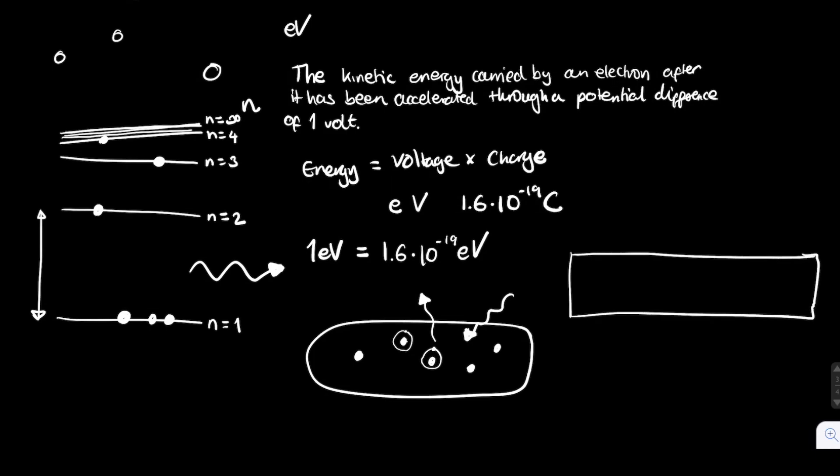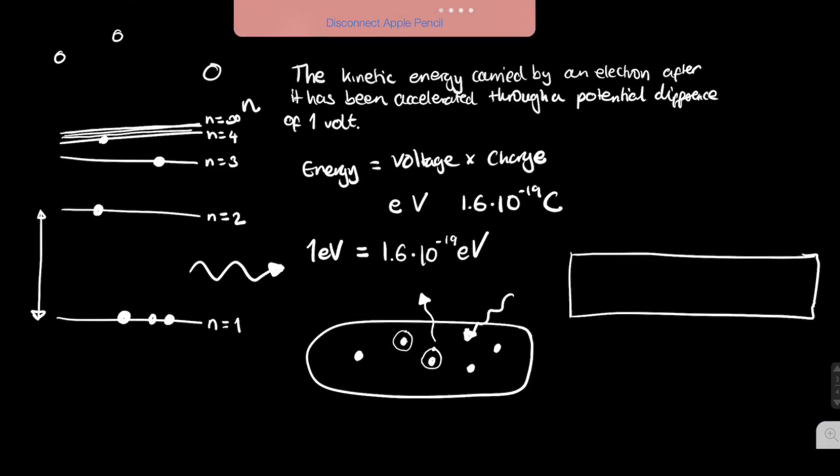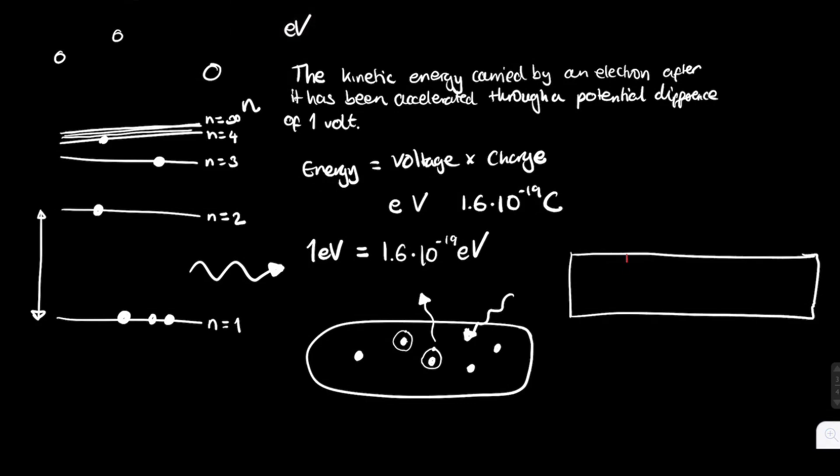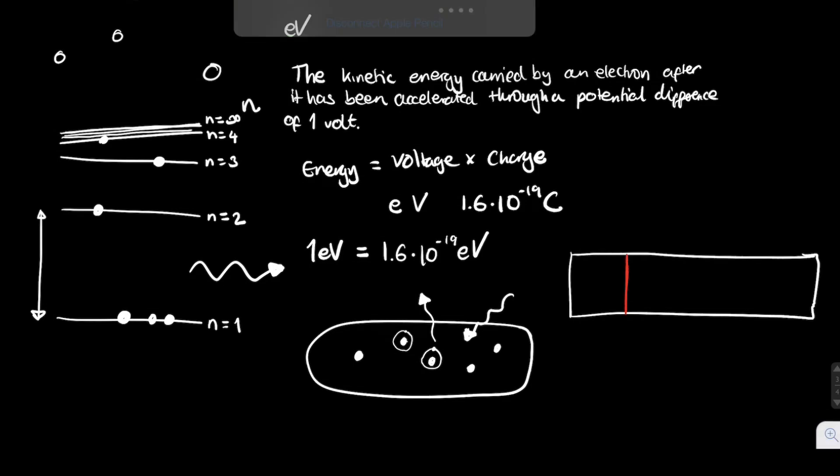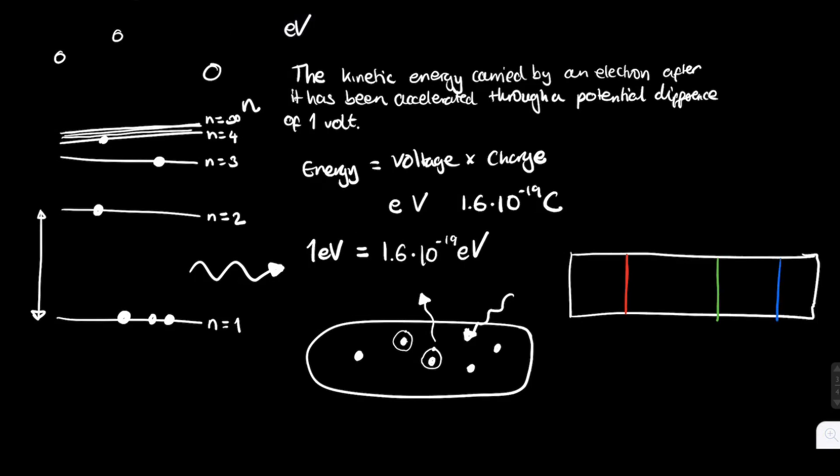Then you're actually only going to see only a very few specific colors. So say you might see one color which is like a red color. You might see one that's a green color. You might see one that's a blue color. But you're only going to see very specific colors.